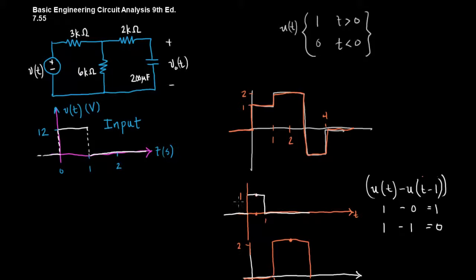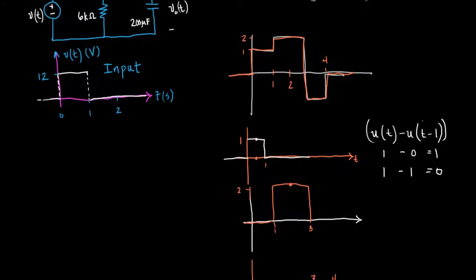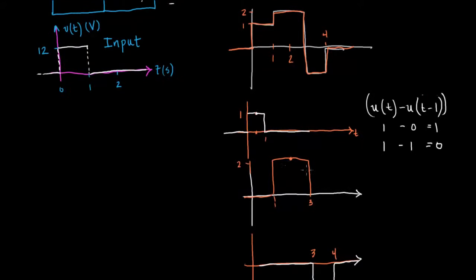So you can convince yourself that if we put a negative value in here we will also get a zero. Now we've got something a little bit different. We're not one we're up at two and we're not starting at zero. We start at one and we end at three. This one is going to be something that looks like this. U of t minus one minus u of t minus three. And all of that needs to be multiplied by a magnitude of two.